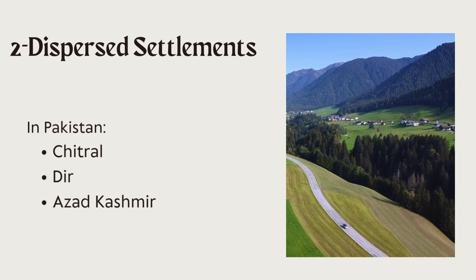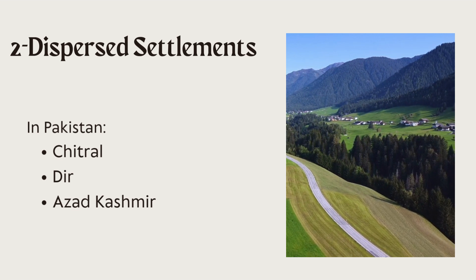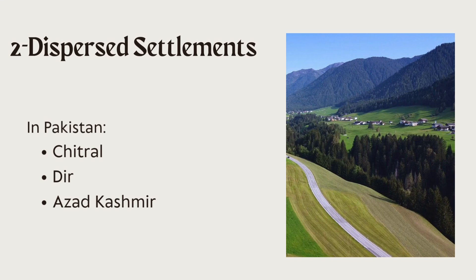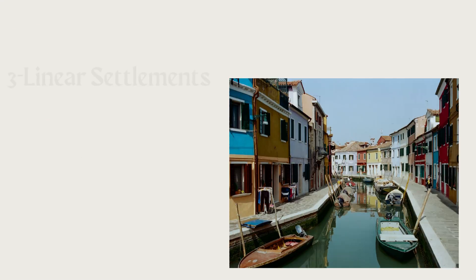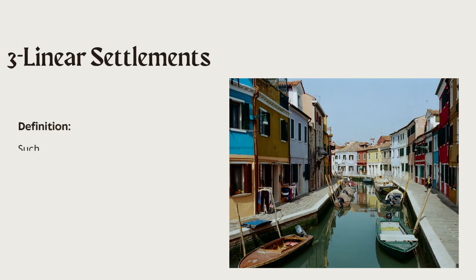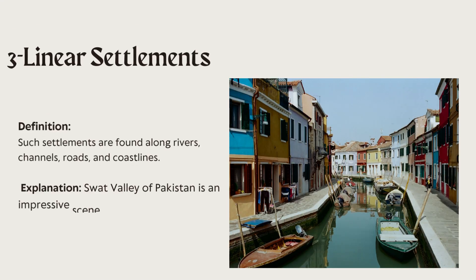In Pakistan, we also find such types of settlements, like in Chitral, Dir, and Azad Kashmir. The third type of settlement is linear settlement. Such settlements are found along rivers, channels, roads, and coastlines.